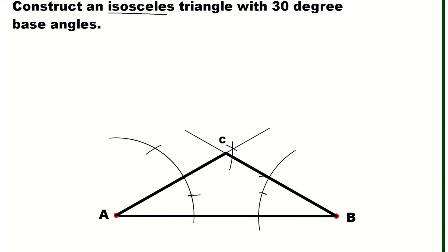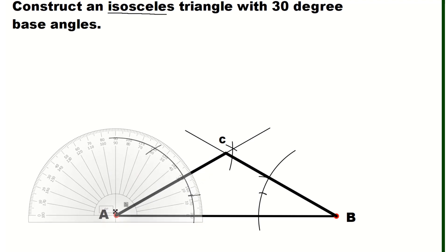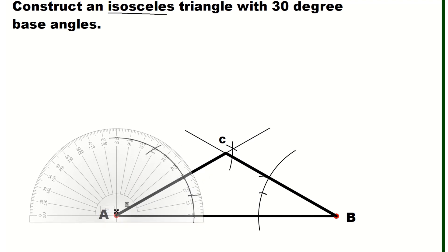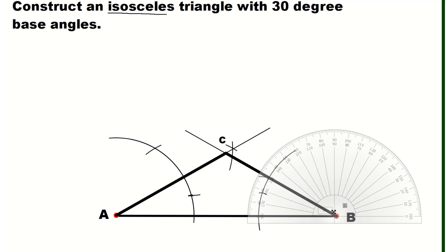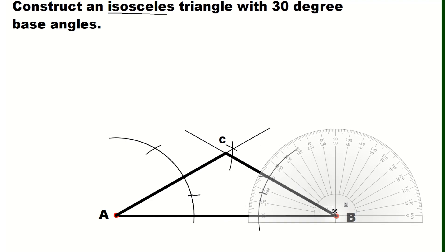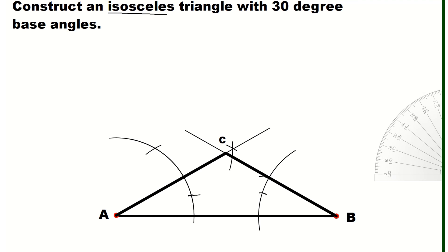If we use the protractor, we can check that the measure of this angle here is 30 degrees, and on the other side it is also 30 degrees. So that's an isosceles triangle with base angles equal to 30 degrees.